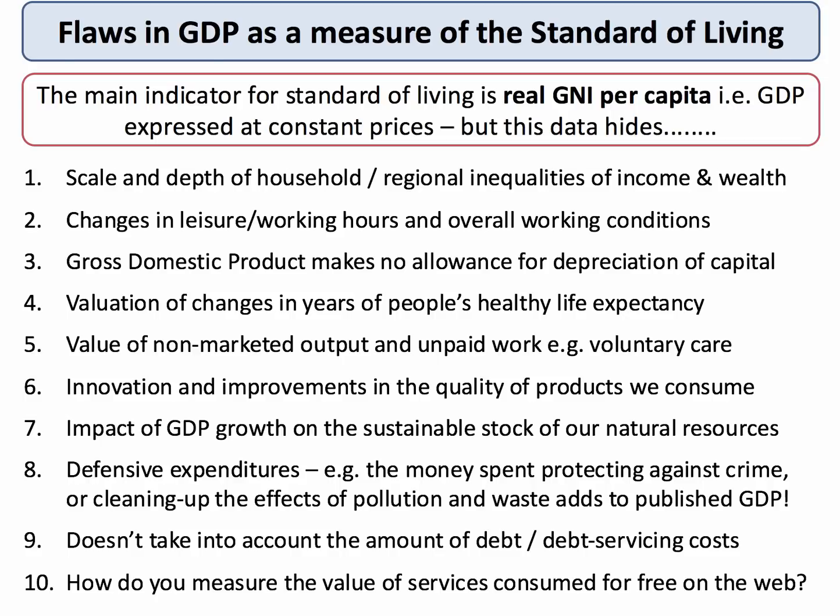The first is that GDP per capita, which is an average, is going to hide some big variations — some big inequalities in income and wealth. Average incomes might be rising, but actually inequality could grow at the same time. Check out our YouTube videos on the Gini coefficient and the Palmer ratio as measures of income inequality.